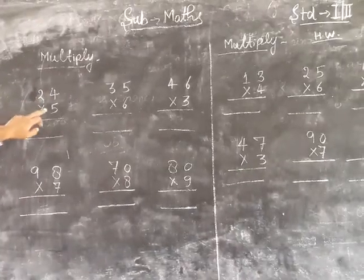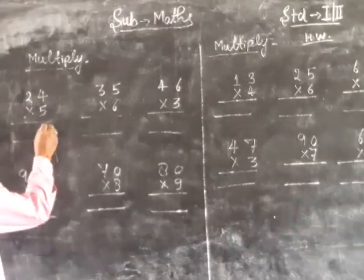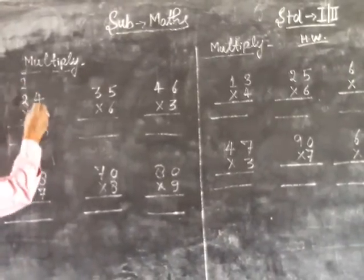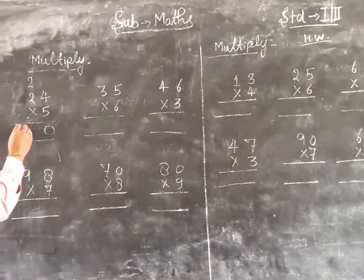So 24 x 5. 5 x 4 is 20, write 0, carry 2. 5 x 2 is 10, plus 2 is 12. Answer: 120.